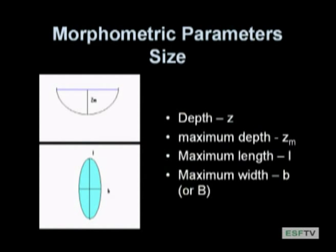So how do we actually quantify these parameters? It's really important to get some common terms. We'll start with size parameters and then shape parameters. The first size parameter everyone can relate to is z, which is depth. We refer to depth as z and the maximum depth as z sub m. The depth is just intuitively how deep the water is, which will obviously change as the water level changes.